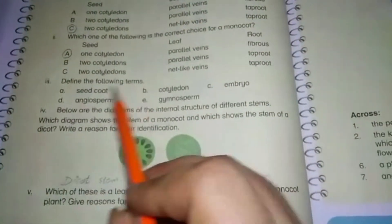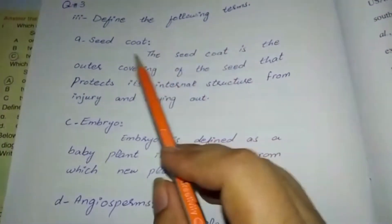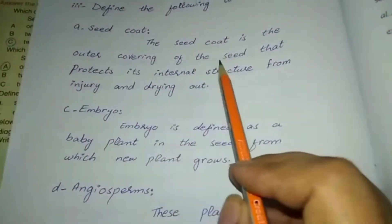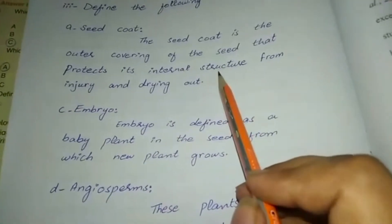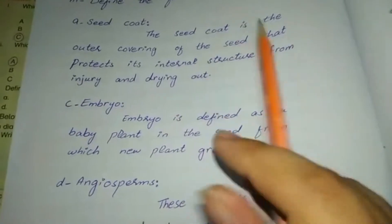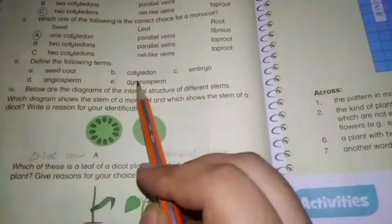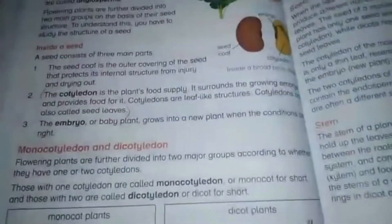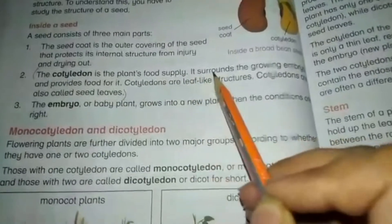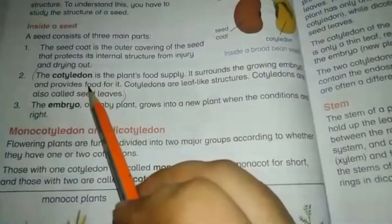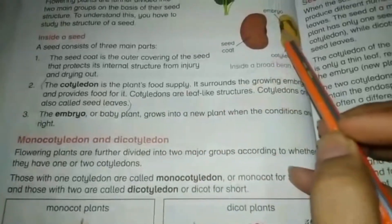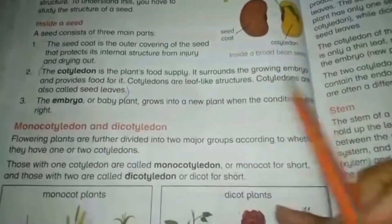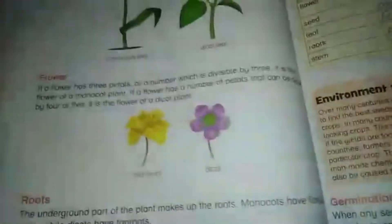Now we will discuss the exercise question related to this topic. Question number three, part three: Define the following terms. The first term is seed coat. The seed coat is the outer covering of the seed that protects its internal structure — meaning the embryo — from injury and drying out. The next definition is cotyledon. The cotyledon is the plant's food supply. It surrounds the growing embryo and provides food for it. Cotyledons are leaf-like structures, also called seed leaves.